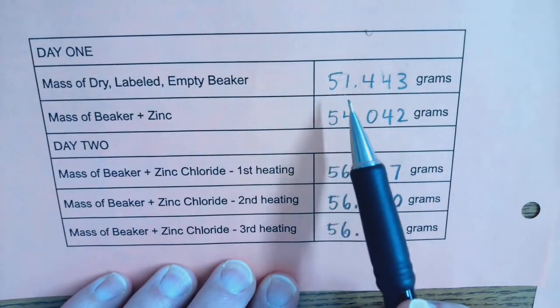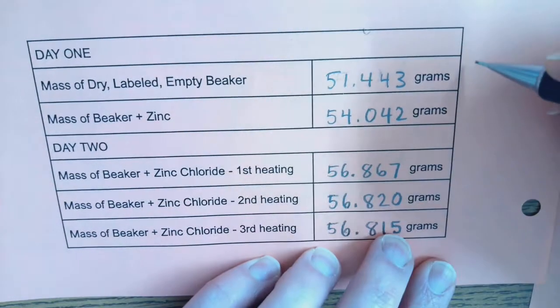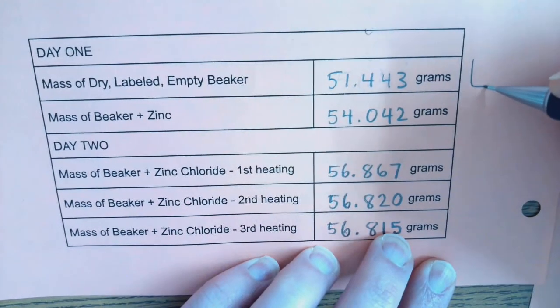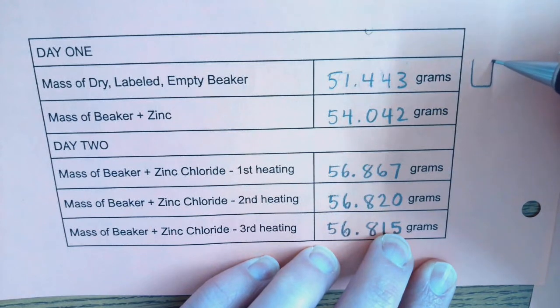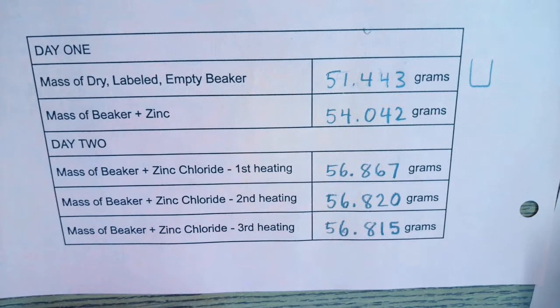So note we do have the mass of our empty beaker. If I want to represent that as a picture I've got my empty beaker and I care about that because I usually end up subtracting that mass out of my subsequent measurements.